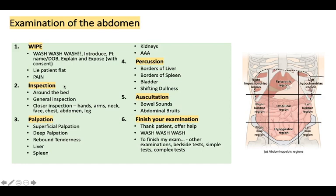After inspection comes palpation. Start with superficial palpation of the nine quadrants, then deep palpation. You can also check for rebound tenderness — tenderness not when you press down, but when you release on palpation. You then palpate for the borders of the liver and the spleen to feel for hepatosplenomegaly. Ballot the kidneys on either side. Finally, look for an abdominal aneurysm — check if there is a pulsatile or expansile mass, usually done in the midline.